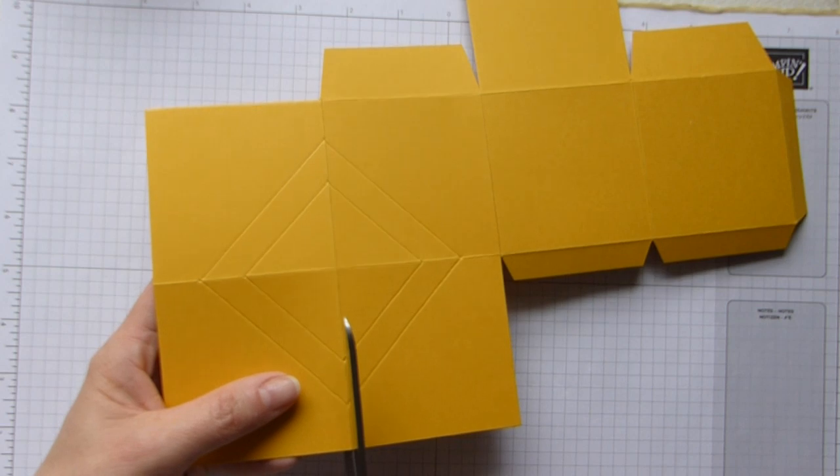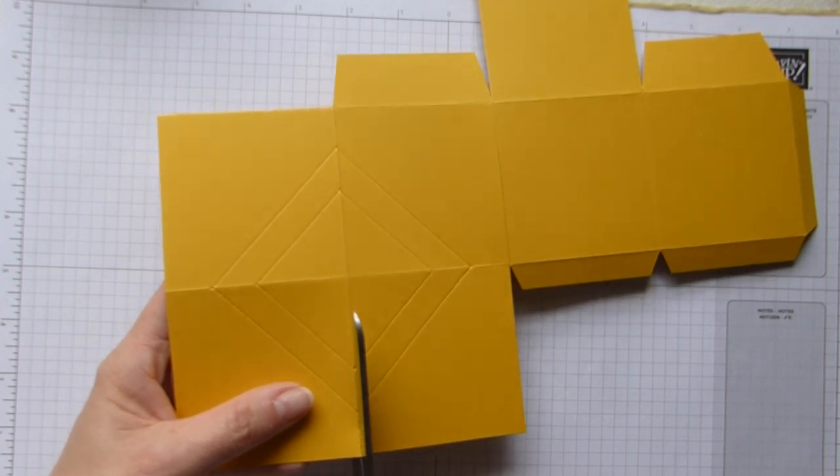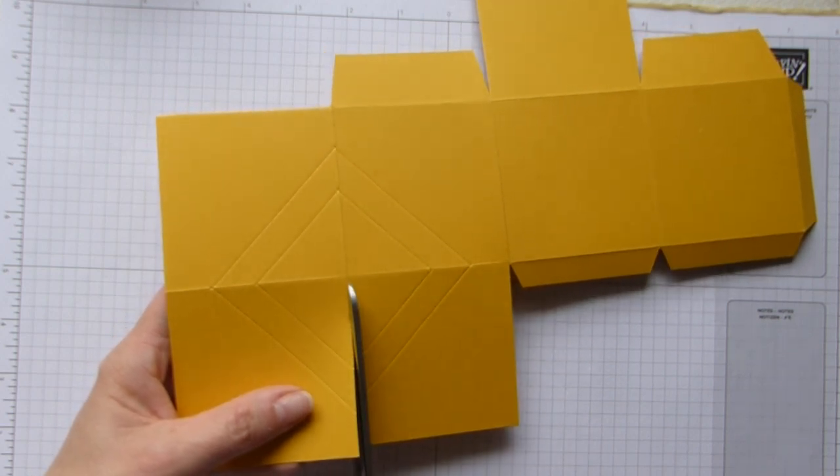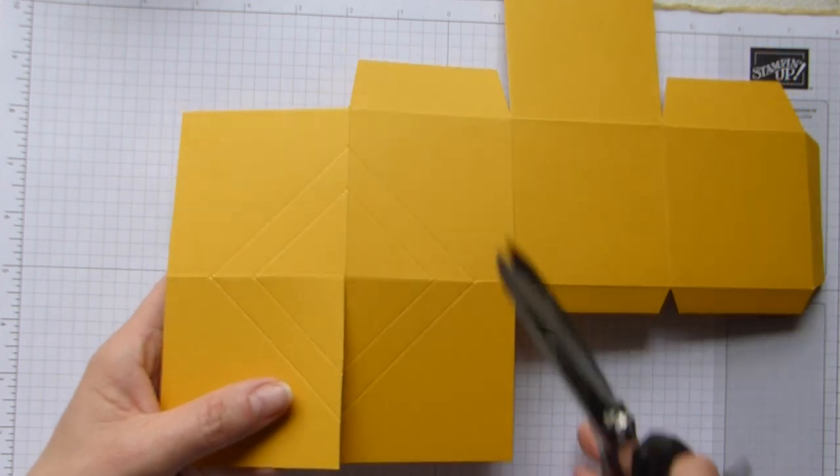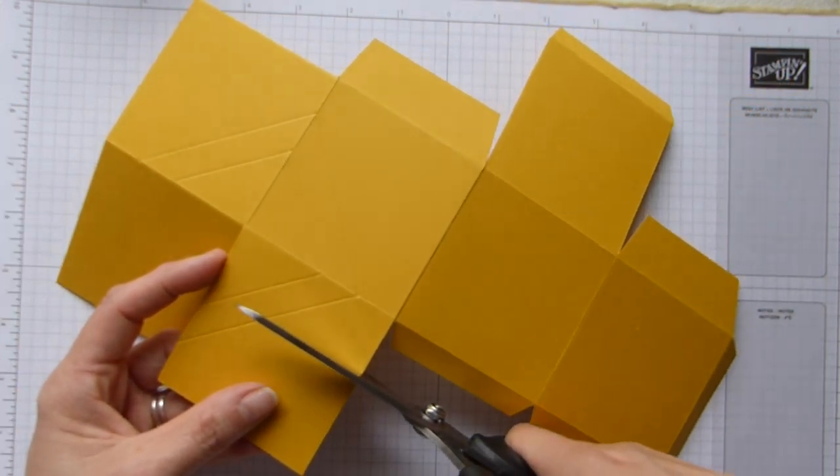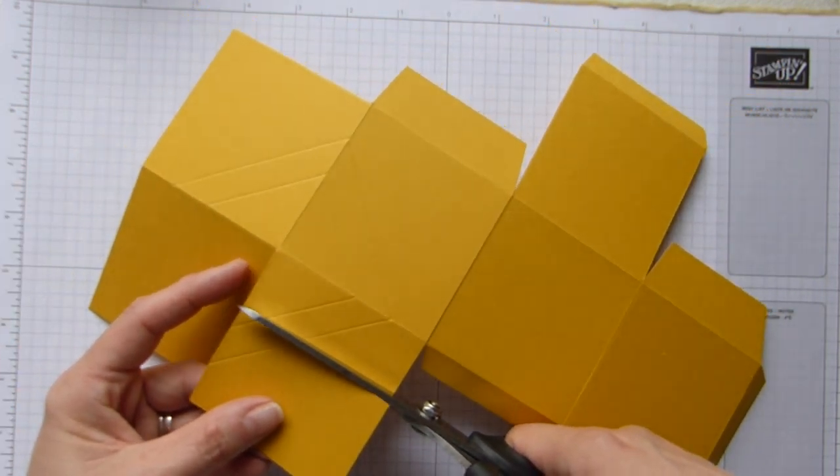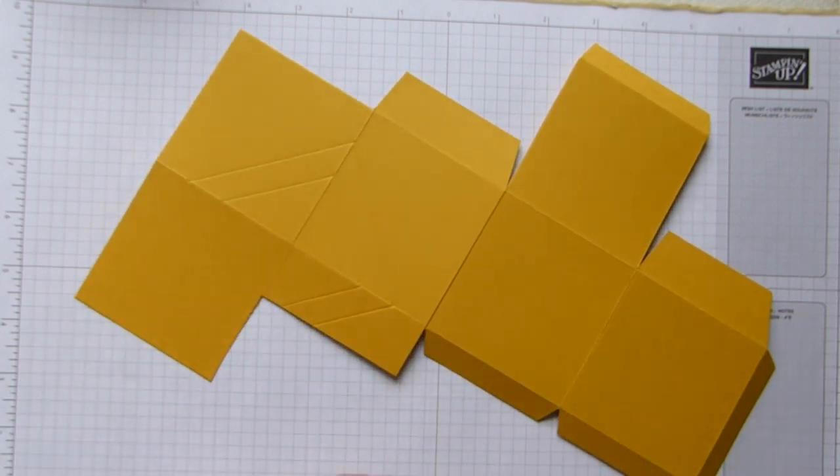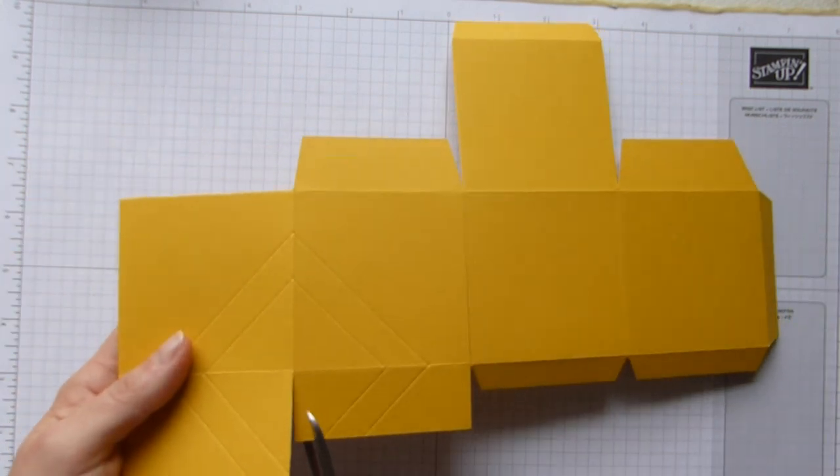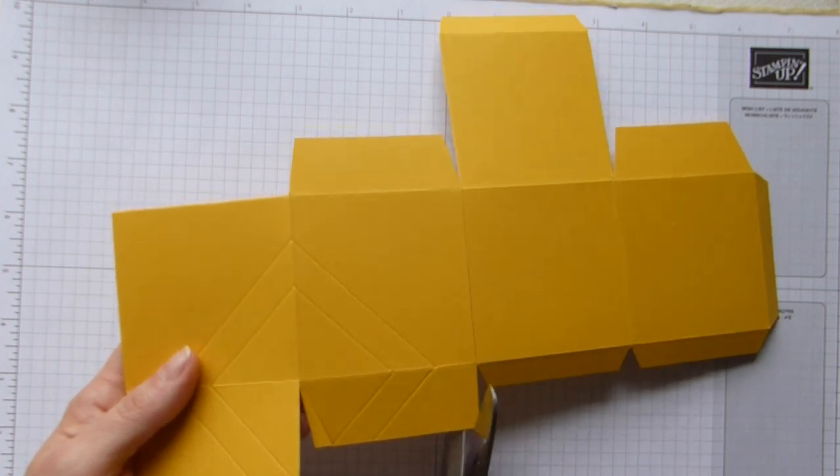Now I'm going to cut down this score line, and I'm going to cut into this. Now I've left this one slightly bigger just because it helps when you're folding that fancy bit. Just cut those out.